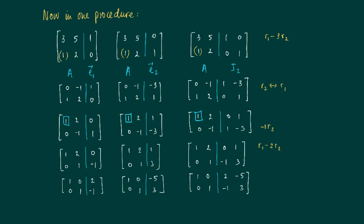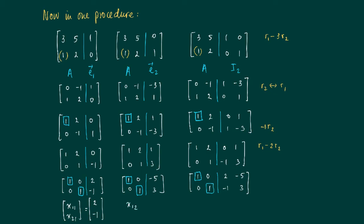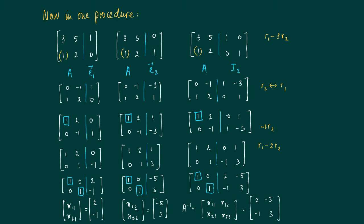We can now read off the solution. The right-hand side gives us the first column of the inverse matrix — which is [2, -1] — and the second column of the inverse matrix — which is [-5, 3]. The inverse is formed by concatenating these two columns: x11, x21 and x12, x22. Therefore, A-inverse equals [2, -5; -1, 3].